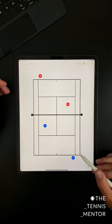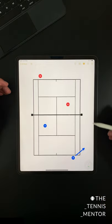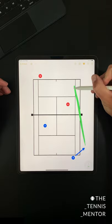The first situation is if you get pulled out wide, there's going to be a much better opportunity to pass your opponent down the line as there's going to be a bigger space.